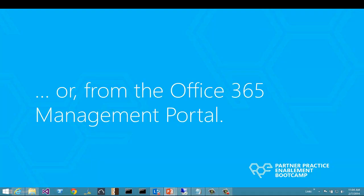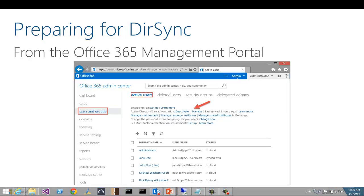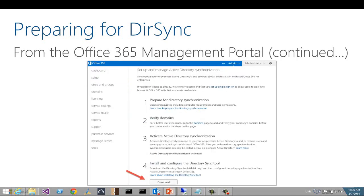You can also set this up from your Office 365 portal by logging in, going to the users and groups section, and looking for the active directory synchronization links. There'll be an option to activate or deactivate, and once activated, it transitions to a screen very similar to what you see in the Windows Azure management portal, with an option to download the directory sync tool in step four.